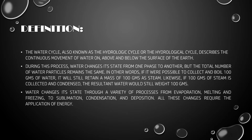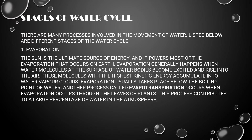All these changes require the application of energy. There are many processes involved in the movement of water. Listed below are different stages of the water cycle. First is evaporation. The Sun is the ultimate source of energy, and it powers most of the evaporation that occurs on earth.